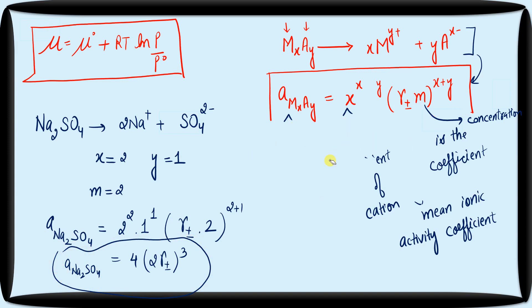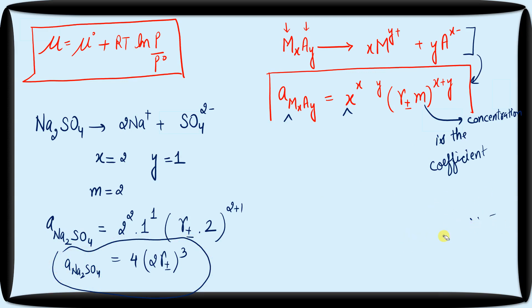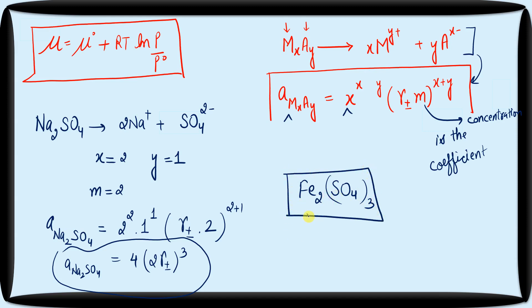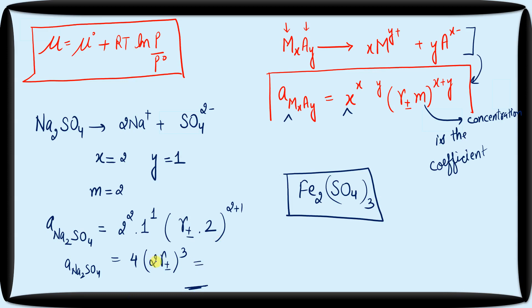If you have understood how to find activity, do this as homework and tell me in the comment section: for Fe₂(SO₄)₃, write the activity expression and solve it. Put in the values and tell me the answer in the form of γ± to some power. The numerical coefficient works out as 2³ × 2⁴ × ... giving 32 × γ±^5 or similar — you solve it and tell me.